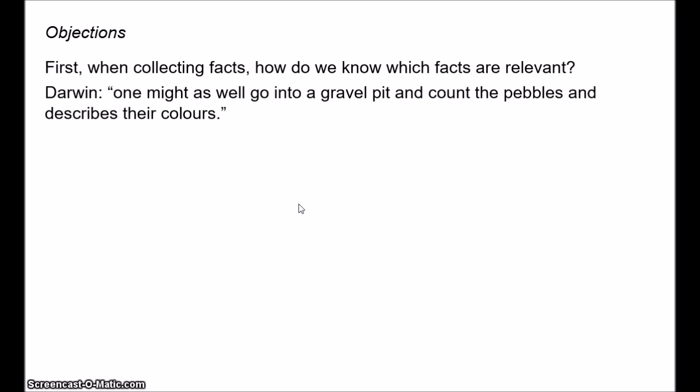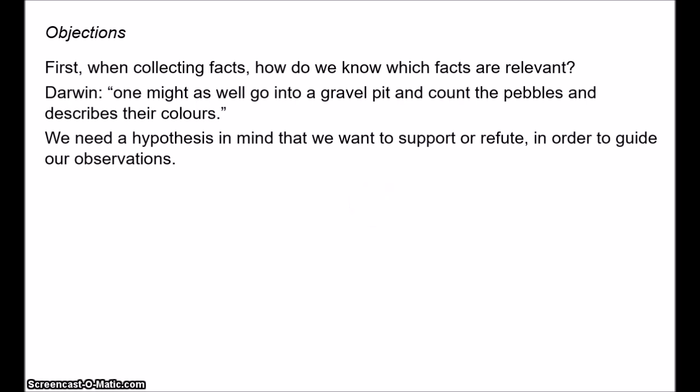Charles Darwin made this point when he said of this method, one might as well go into a gravel pit and count the pebbles and describe their colours. Darwin continues, he says, all observation must be for or against some view if it is to be of any service. Even if you have specified a particular problem that you want to solve, until you have some hypothesis in mind, you don't know what the relevant data is. So let's say we want to know, for example, what causes plague. Plague is a disease that afflicts humans. So, you know, what do we do? Well, do we just make a collection of every observation we can about humans? I mean, should we collect data about the number of hairs on each individual's arm? The inductivist requires us to collect data blind. But science could never get started if we adopted this approach.